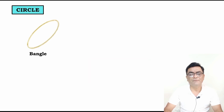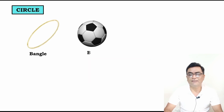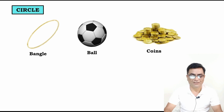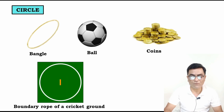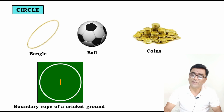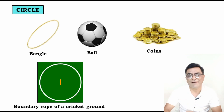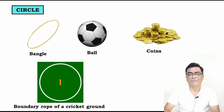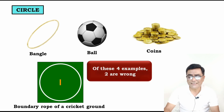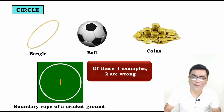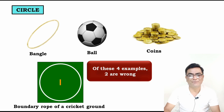Of these four examples — bangle, ball, coins, boundary rope on a cricket ground — which are circles and which are not? We will understand that. Ball and coins are wrong examples of a circle, and we will understand why they are wrong.